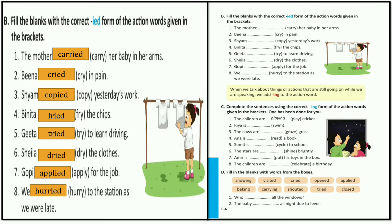Bina cried. Sam copied yesterday's words - copy: C-O-P-Y, Y goes away, add IED. Veenita fried the chips - fry: F-R-Y, Y goes away, add IED - fried. Veenita tried to learn driving. Shaila dried the clothes. Gopi applied for the job. We hurried to the station.